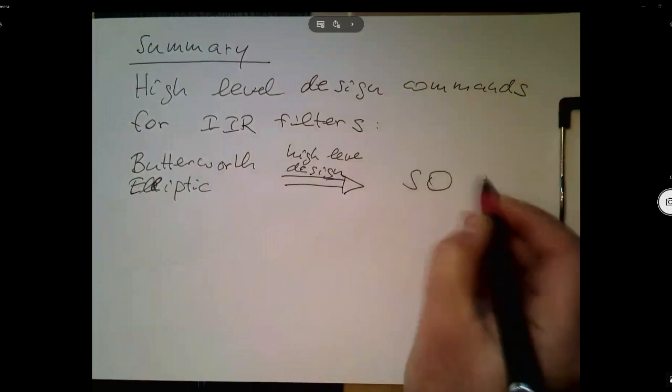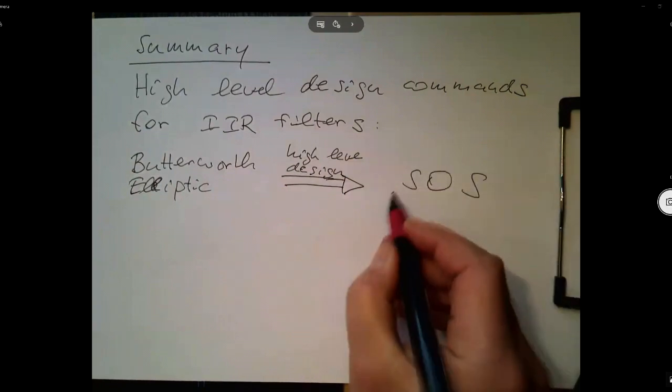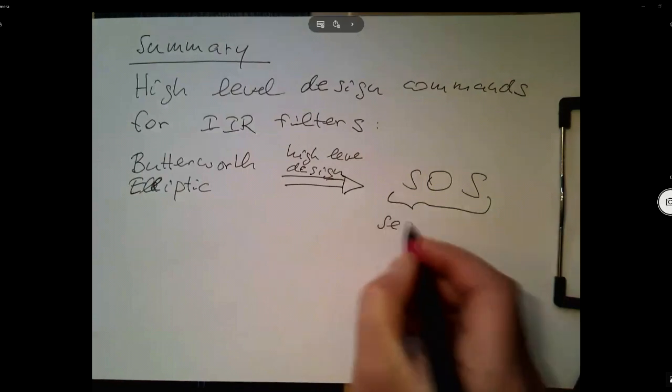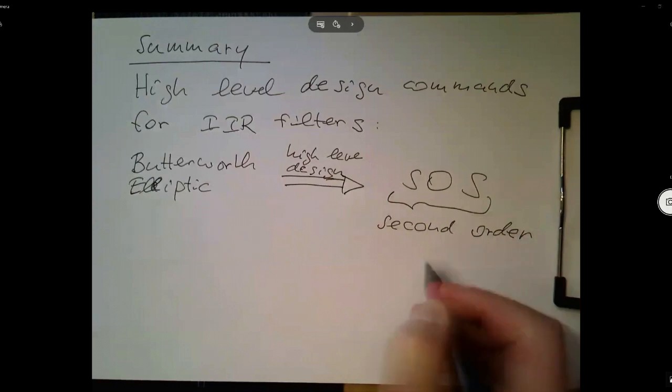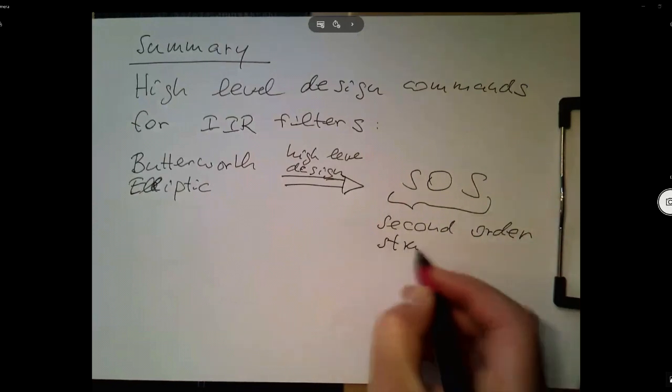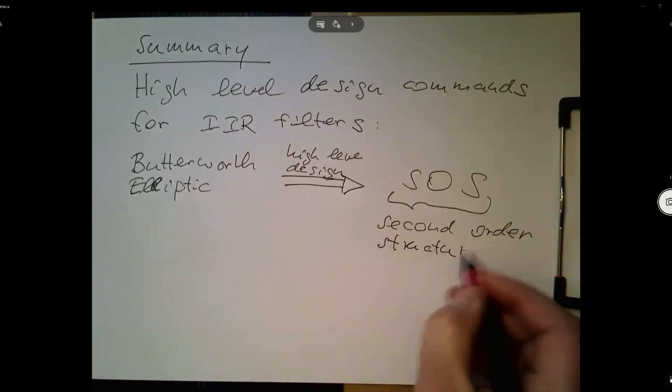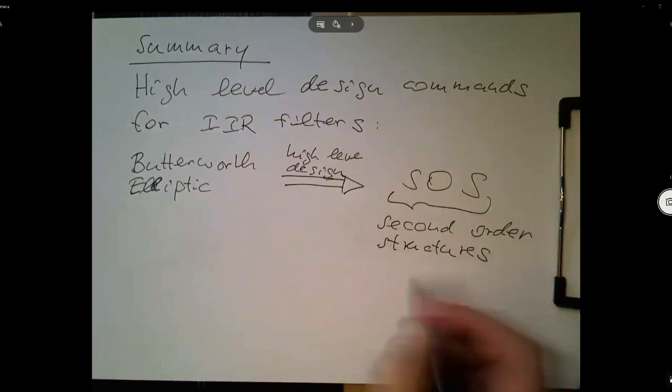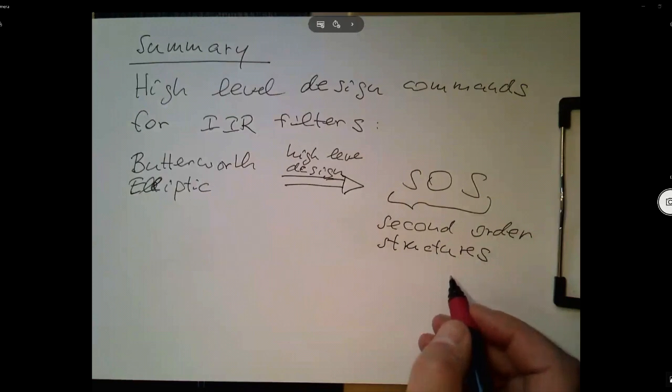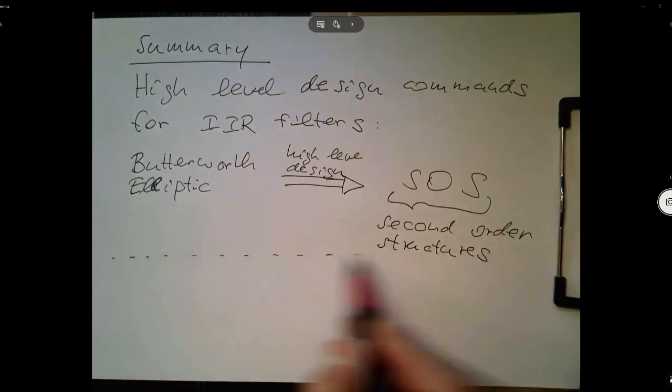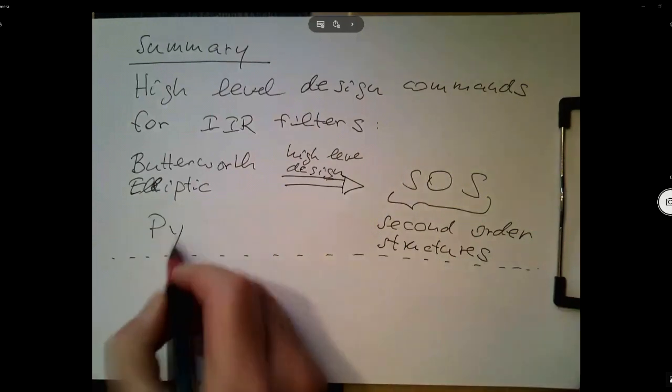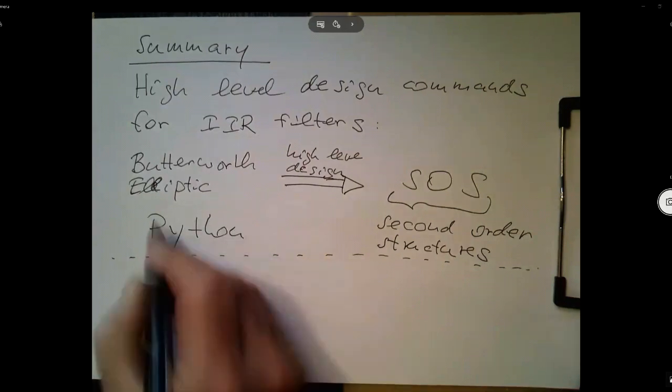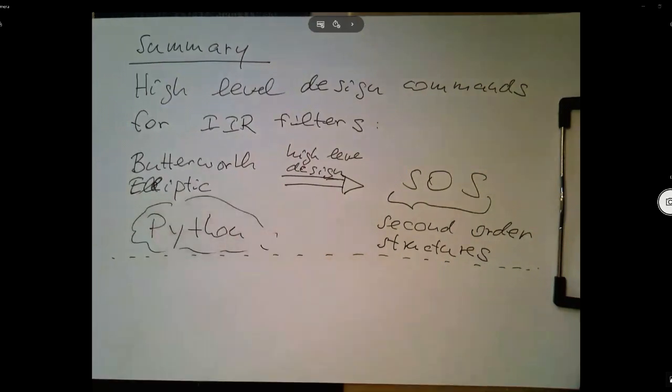And then the output are second-order structures - second-order structures, or as we call them, second-order IR filters. So all this is done in Python, this design process here. That's all done in Python.